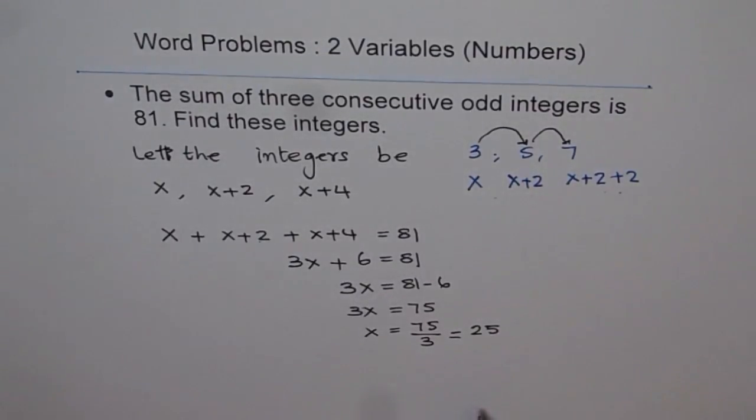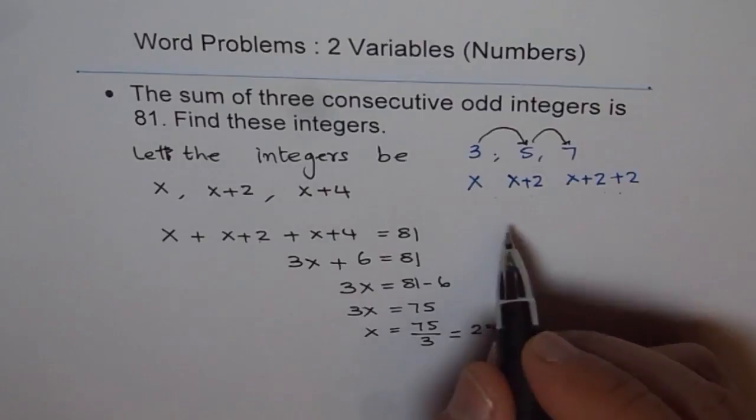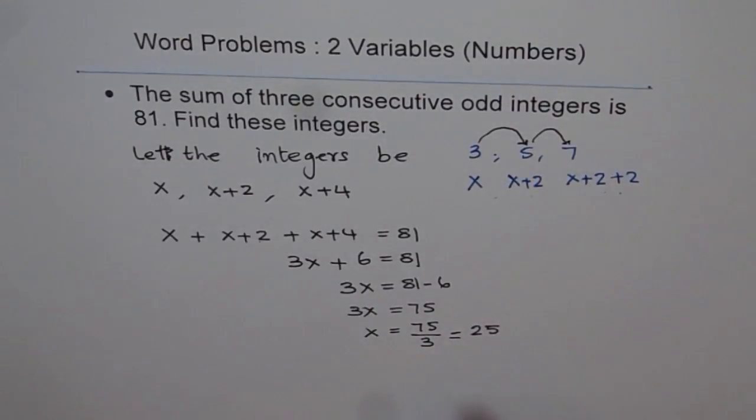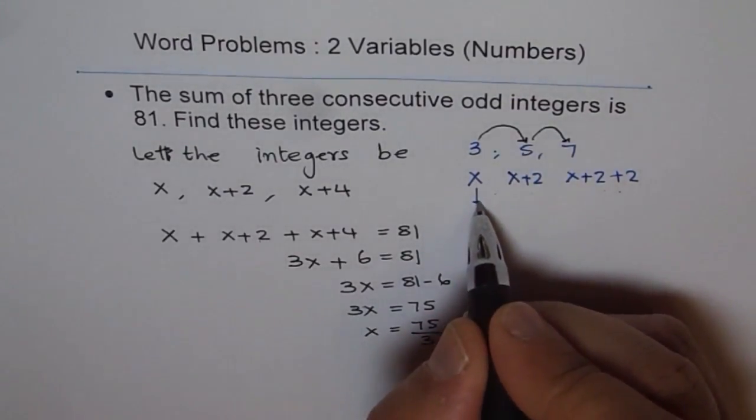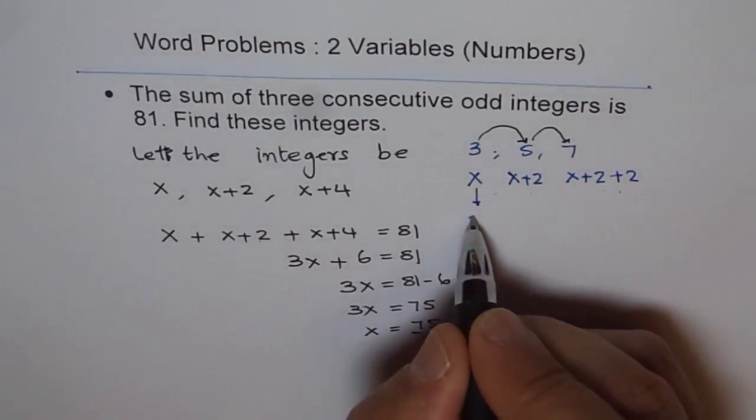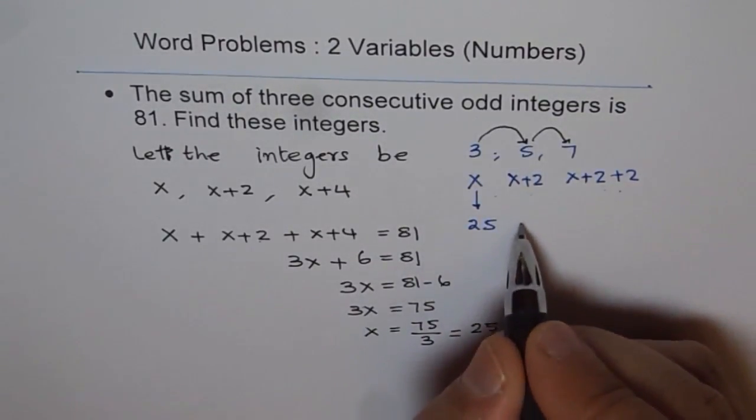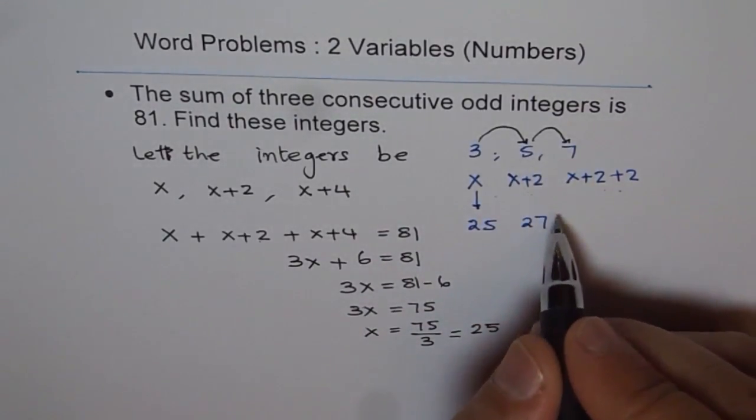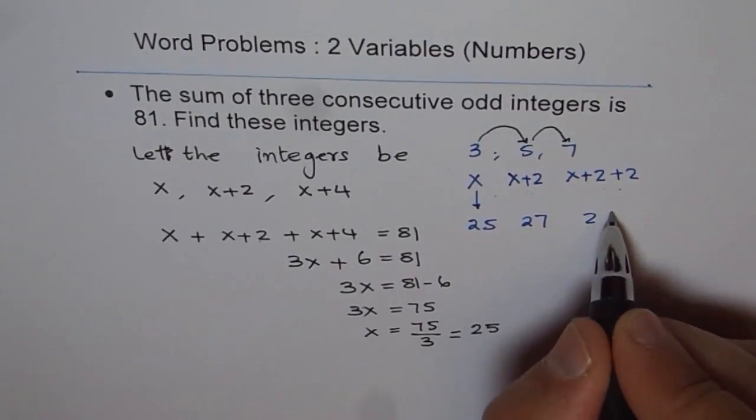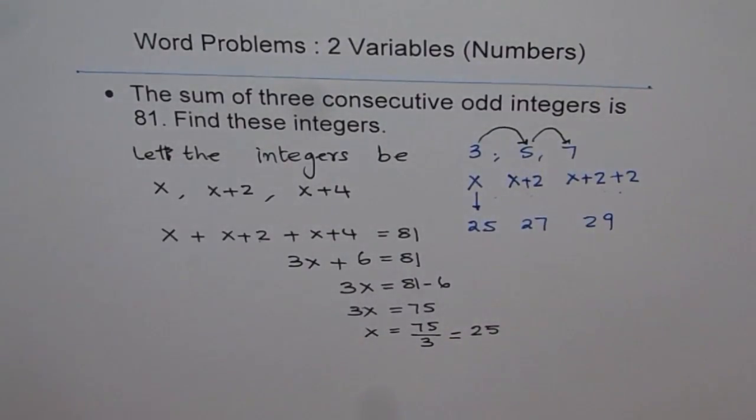So x = 25, x+2 will be 27, and then +2 will be 29. So these are the three integers for us.